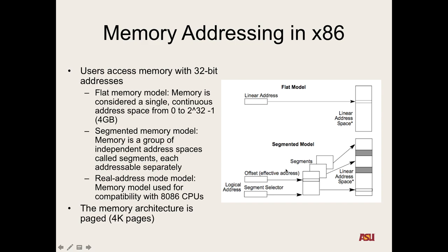What's the downside of the segmented model? It's harder to manage — the developer or compiler writer has to track both segments and offsets. It's also harder to analyze code because you're dynamically calculating offsets and selectors. For every memory access, you have to add segment plus offset to get the actual address, which adds overhead. You don't get anything for free — everything has some kind of cost.